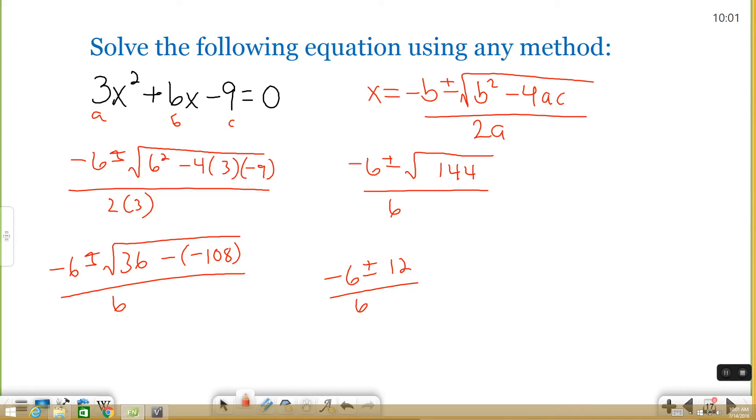So now I'm almost there. I have about one more step to do before I get my two answers. So what I'm going to do is I'm going to split this up into two different fractions. I'm going to do negative 6 plus 12 over 6 and I'm going to do negative 6 minus 12 over 6. That's what the plus or minus means.